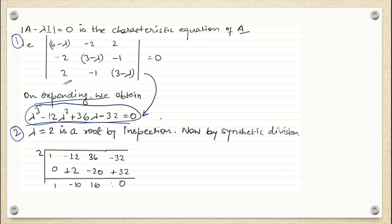We have covered synthetic division previously — if you are not sure about this method you can see that video. The very first step in synthetic division is to get one root by the inspection method, where we try substituting lambda as 1, -1, 2, or -2 so that the left-hand side becomes zero. If the left-hand side becomes zero, that particular value is one root of the equation.